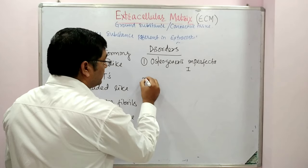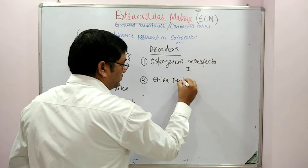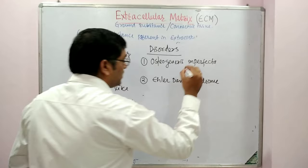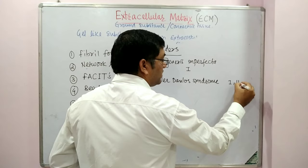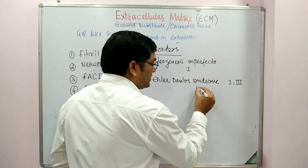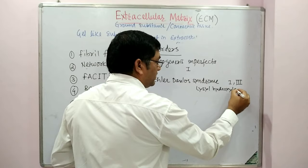The second disorder is Ehlers-Danlos syndrome, with various types. It is due to mutation in the gene coding for Type I and Type III collagen, and also there may be a defect in lysyl hydroxylase. This results in Ehlers-Danlos syndrome.